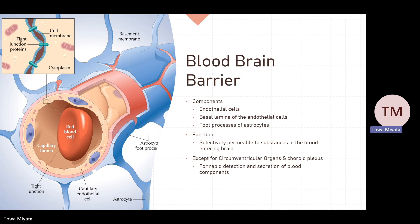The blood-brain barrier is my final topic before my friend continues with stroke. As you may have studied in histology, it is a barrier consisting of endothelial cells, basal lamina, and the foot processes of astrocytes — remember this is very important. Its function is to be selectively permeable to substances in the blood entering the brain: for example, we want oxygen and glucose to enter, but we don't want toxins, certain drugs, or bacteria to enter the brain.